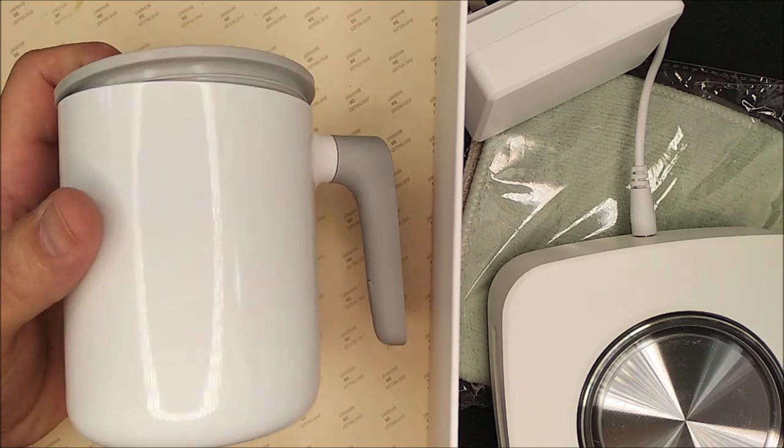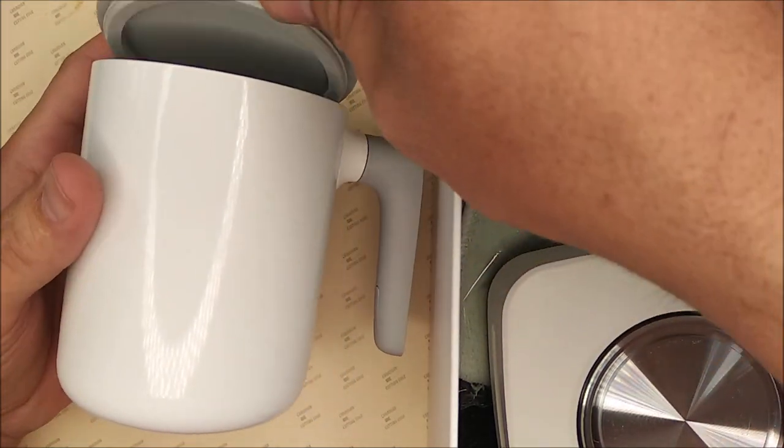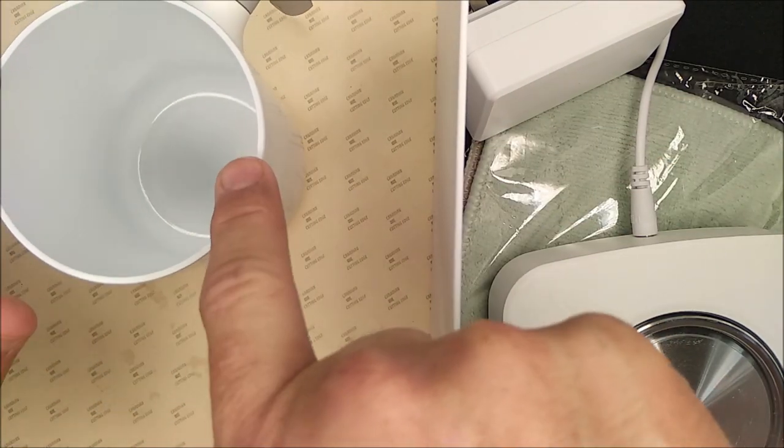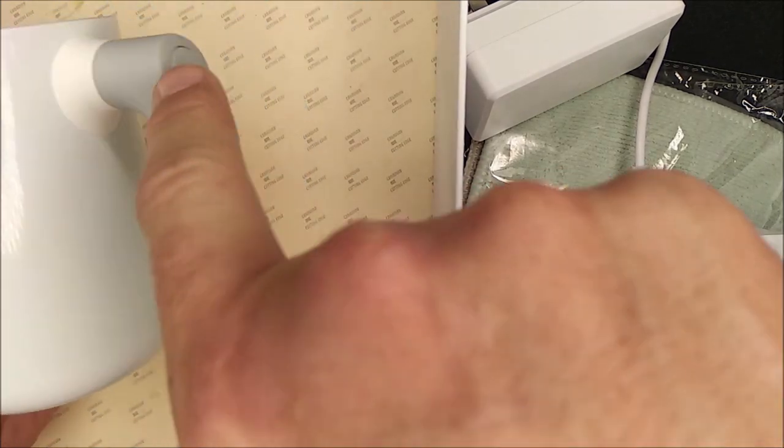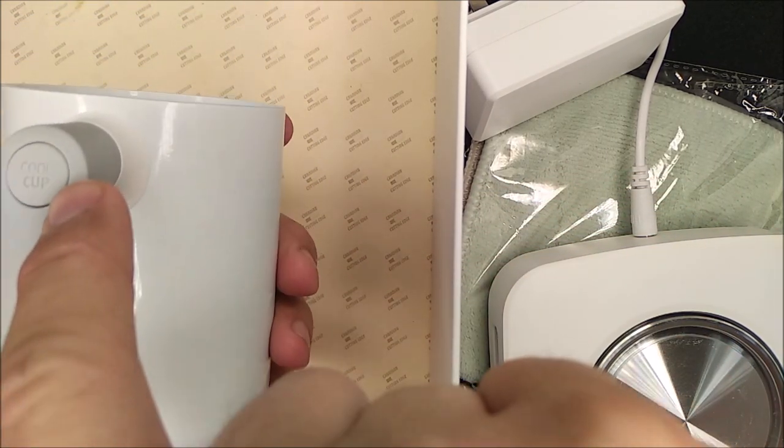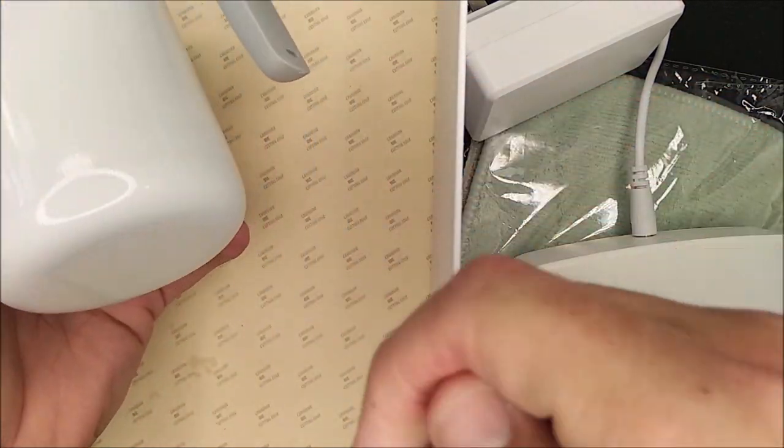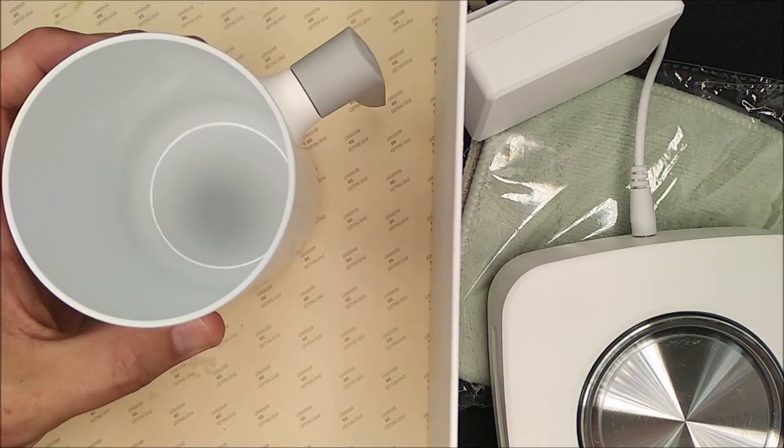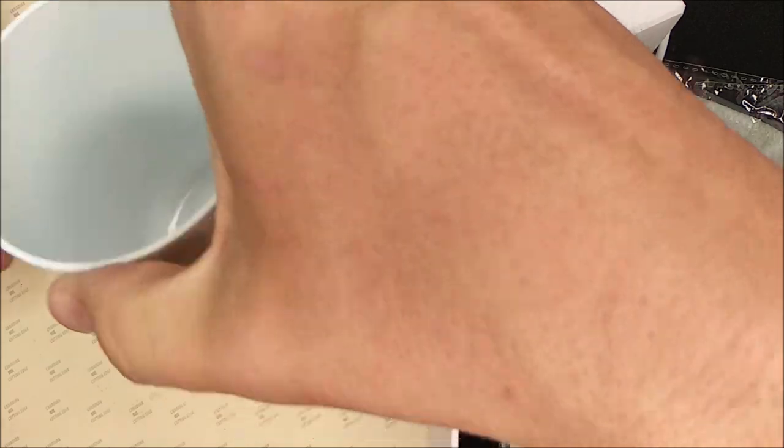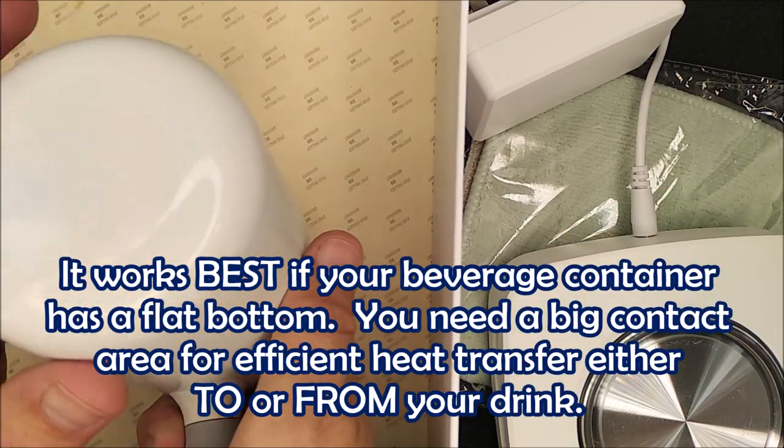So first, let's look at the mug. It's a decent-looking mug. It's some kind of aluminum alloy, and it's got a handle that screws on. It says cool cup right here. If you pop that out, there's a screw that comes in there, so you can take the handle off if you wanted to. I can't see any reason why you would want to. And it's got a flat bottom.